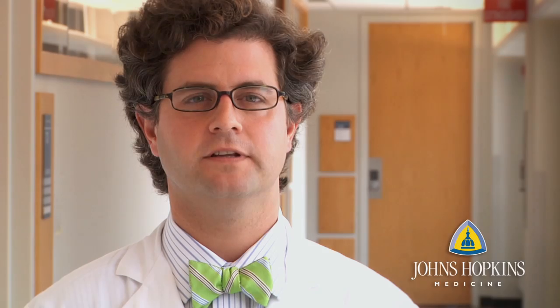Aortic aneurysms are typically found incidentally, meaning that the patient didn't know that they had it. It can be felt on a physical exam in the abdomen as a pulsatile mass, or it can be seen on an ultrasound or a CAT scan.